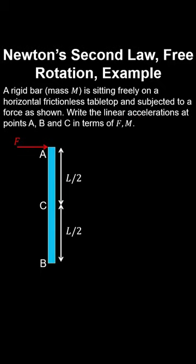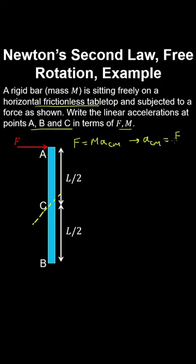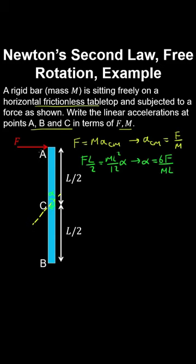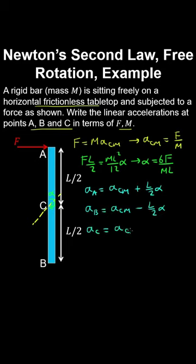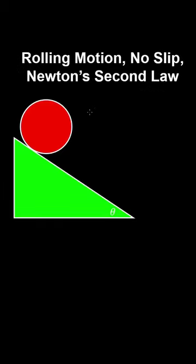A rigid bar on a frictionless horizontal tabletop is subjected to a force. There are no forces in the z direction, so the bar is in equilibrium vertically. Applying Newton's second law horizontally gives the translational acceleration of the centre of mass. Applying the rotational analogue of Newton's second law — taking torques about the centre of mass, where the bar is free to rotate — gives: torque (force times moment arm) equals moment of inertia about the centre-of-mass axis times angular acceleration. Superimposing translational and rotational components gives the acceleration at each point; the acceleration at C is purely translational.